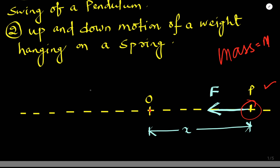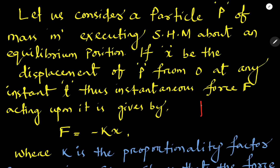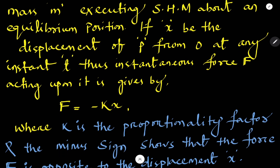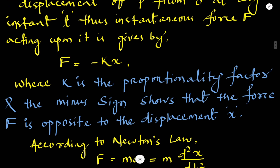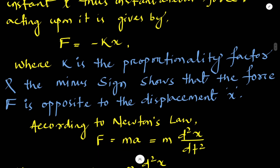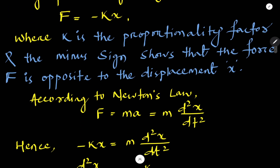When the particle is executing SHM, the force is opposite to the equilibrium position. The force F is directly proportional to minus x, so F equals minus kx, where k is the proportionality constant. The minus sign indicates the force F is opposite to the displacement x.